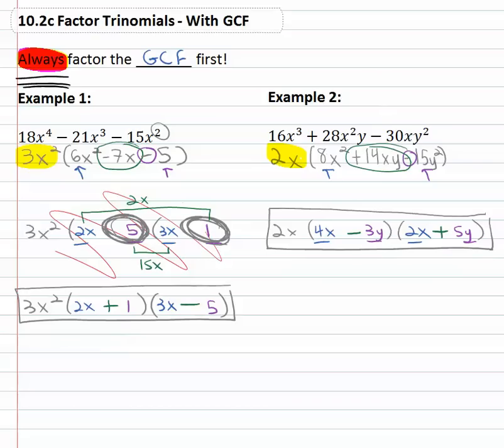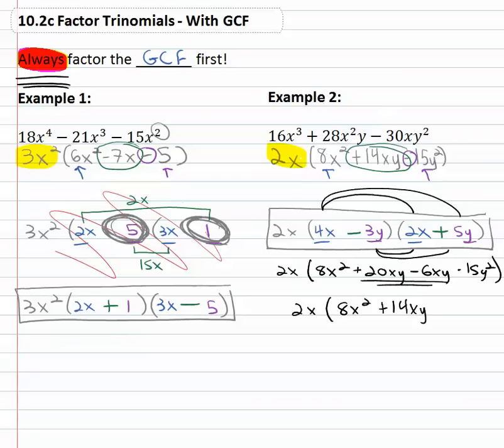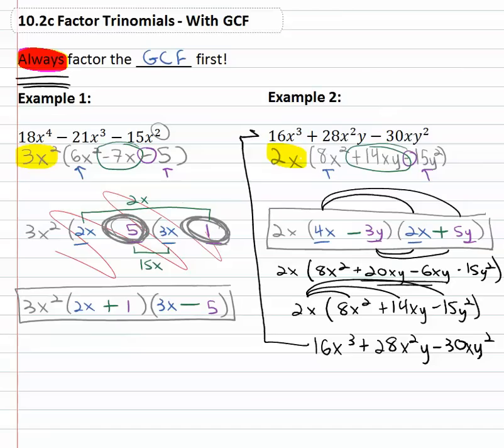Now as always you can check your answers on these by multiplying them out. With these I suggest you do the binomials first and distribute the monomial at the end. Let's just check this. 4x times 2x is 8x^2, 4x times 5y is 20xy, negative 3y times 2x is negative 6xy, negative 3y times 5y is negative 15y^2. Combine like terms in the middle, so we have 2x(8x^2 + 14xy - 15y^2). And now that we've multiplied the binomials, we'll distribute the monomial giving us 16x^3 + 28x^2y - 30xy^2, and you'll notice that is in fact the original problem we started with.